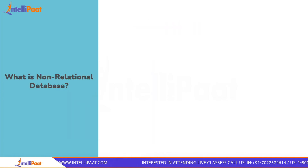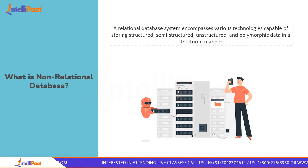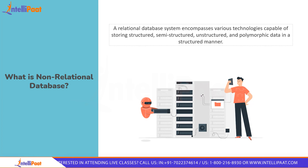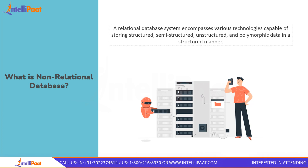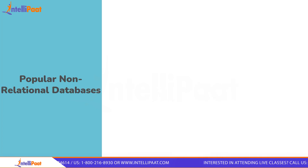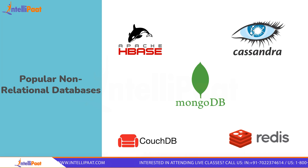A non-relational database is a type of database that doesn't use the tables, fields, and columns of a relational database. Instead, it uses storage models optimized for the data being stored. NoSQL databases are designed for the cloud and are good at horizontal scaling. They are used for big data and real-time web apps. Some popular non-relational databases include MongoDB, Apache HBase, Cassandra, CouchDB, Redis, and much more.